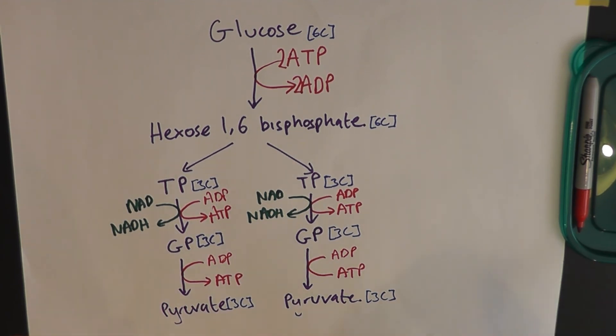That's glycolysis. Quick summary. Starts off with glucose, finishes with two pyruvate molecules, which are going to go into the next stage. And you've got a net gain of two ATP and two NADH. Thanks for watching.